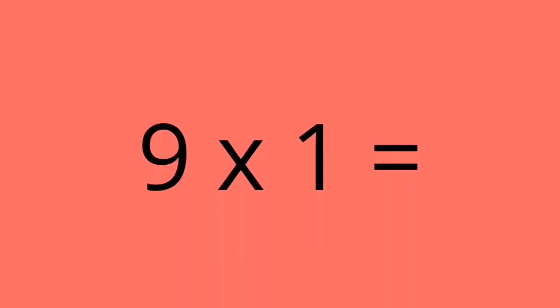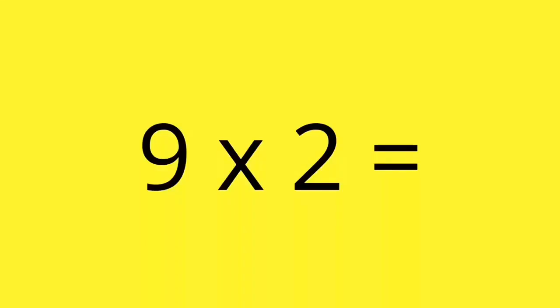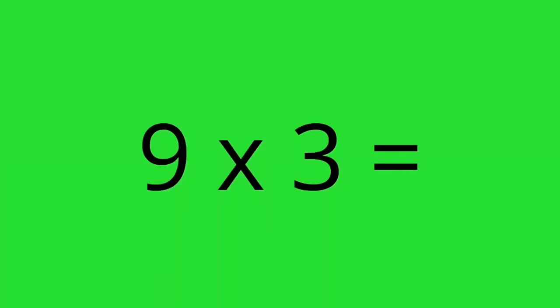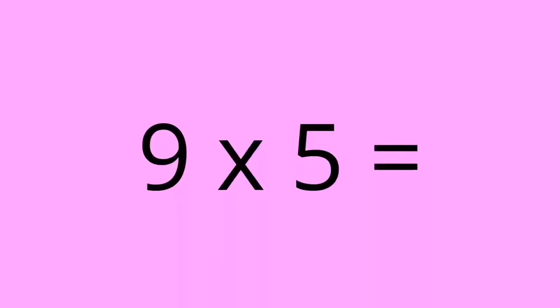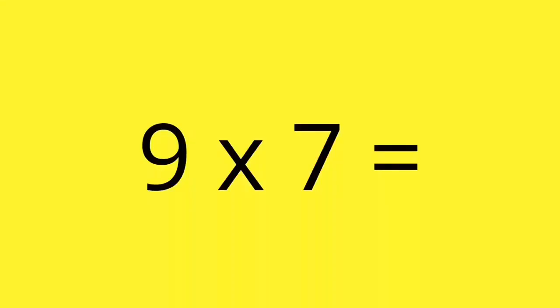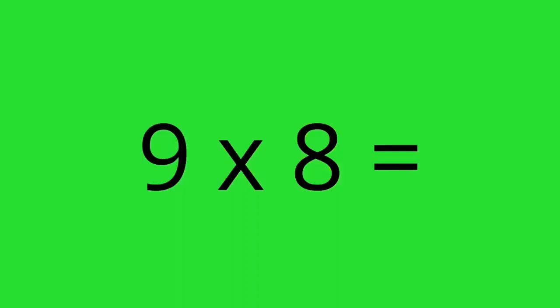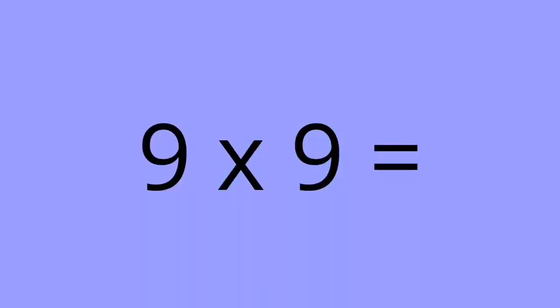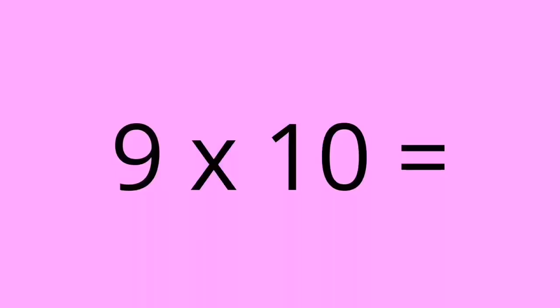9 times 1 equals 9. 9 times 2 equals 18. 9 times 3 equals 27. 9 times 4 equals 36. 9 times 5 equals 45. 9 times 6 equals 54. 9 times 7 equals 63. 9 times 8 equals 72. 9 times 9 equals 81. 9 times 10 equals 90.